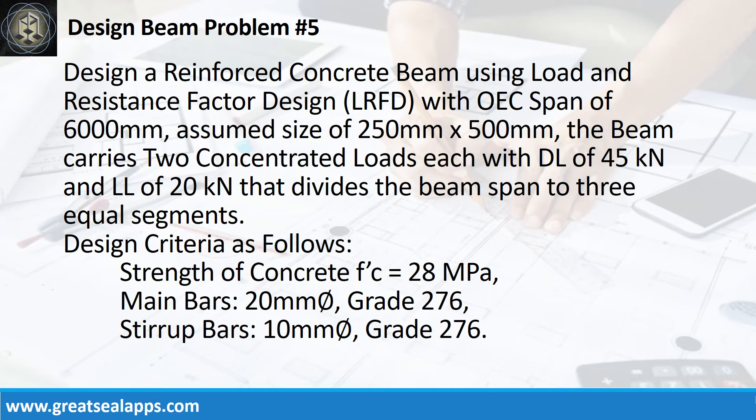Design a reinforced concrete beam using load and resistance factor design with one end continuous span of 6000 mm. Assume a size of 250 mm by 500 mm. The beam carries two concentrated loads, each with a dead load of 45 kN and live load of 20 kN, dividing the beam span into three equal segments.